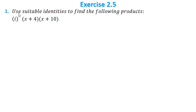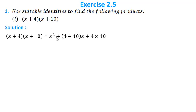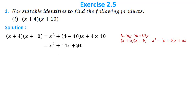The first problem is to use suitable identities to find the following products. Question 1: (x + 4)(x + 10). We use the identity (x + a)(x + b) = x² + (a + b)x + ab. So we write x² + (4 + 10)x + (4 × 10), which simplifies to x² + 14x + 40.